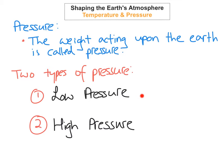Low pressure is when the air is heated and expands, rises into the atmosphere, and we are left with an area of low pressure. High pressure is when cool air starts to descend down onto the Earth. An important thing you must know is that winds always blow from areas of high pressure to areas of low pressure.